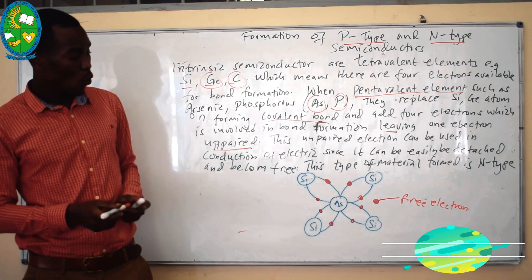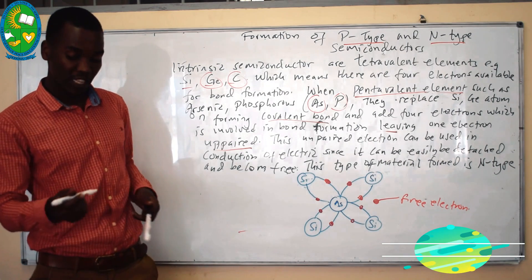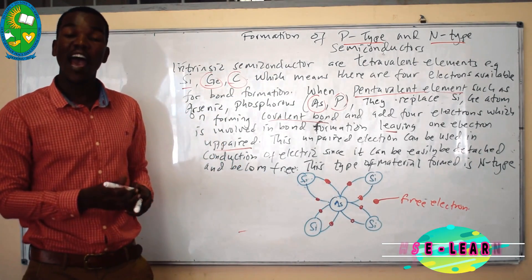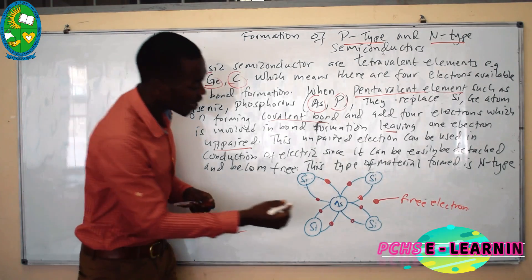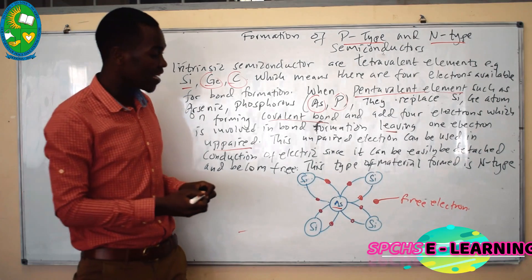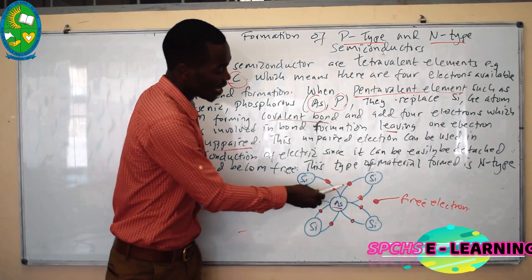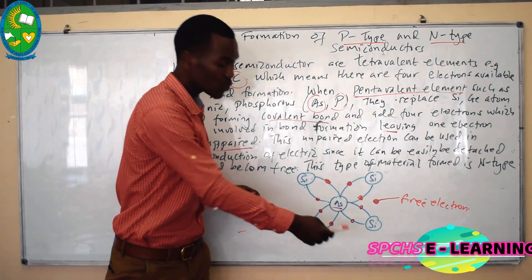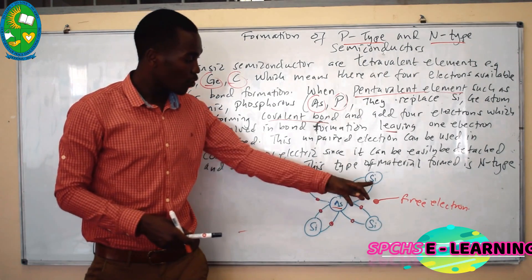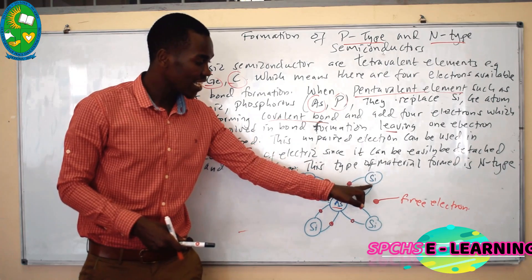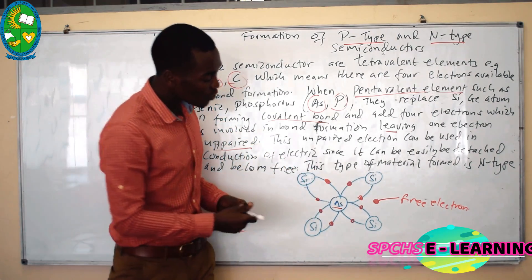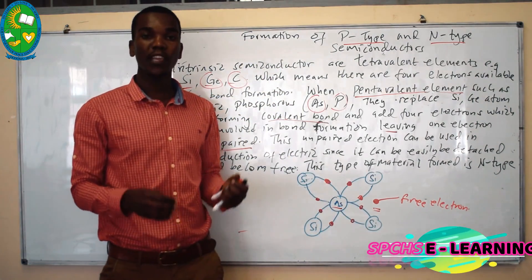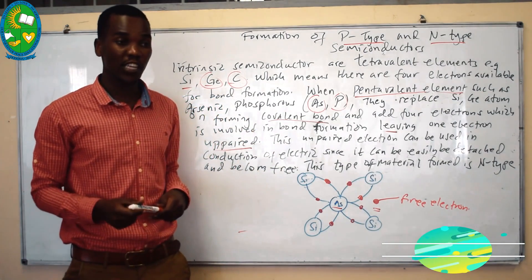As shown in the illustration, we have silicon atoms in the crystal, with arsenic as the impurity at the center. Since arsenic is a pentavalent element, it gives four electrons for covalent bond formation — sharing with the surrounding silicon atoms. However, there will be one extra unpaired electron, which can be transferred to the conduction band and used in the conduction of electricity.